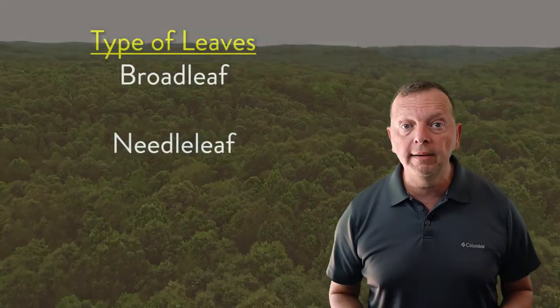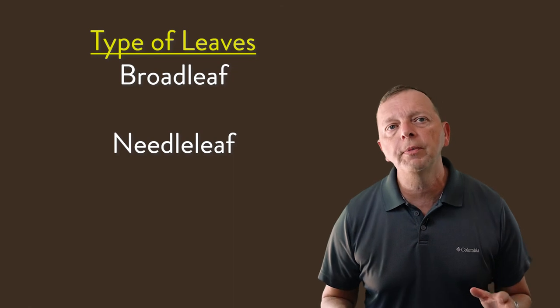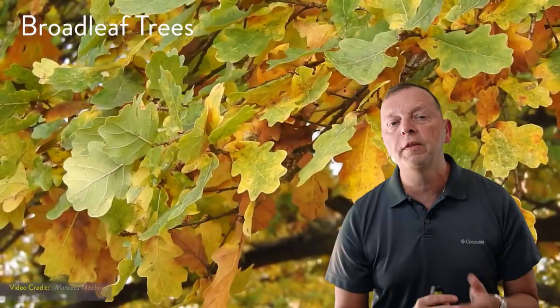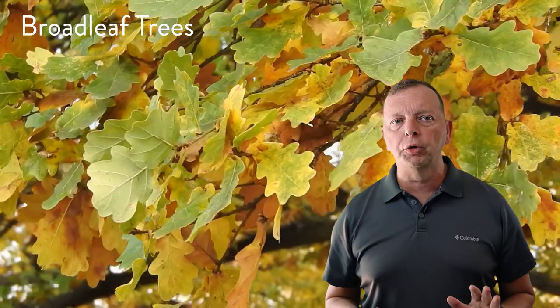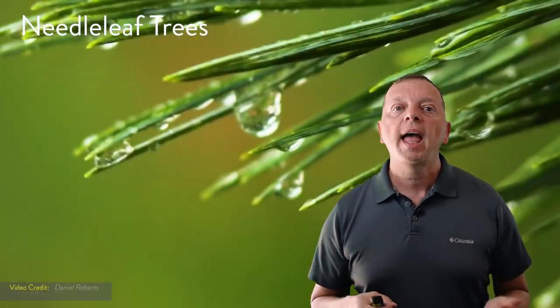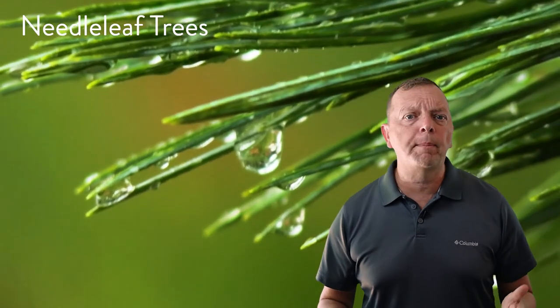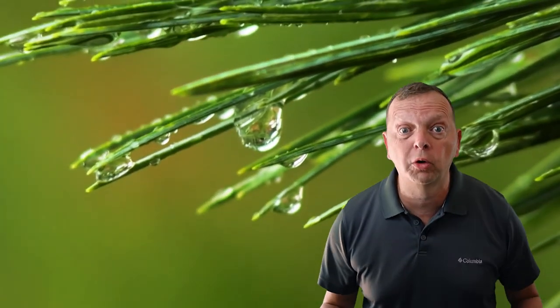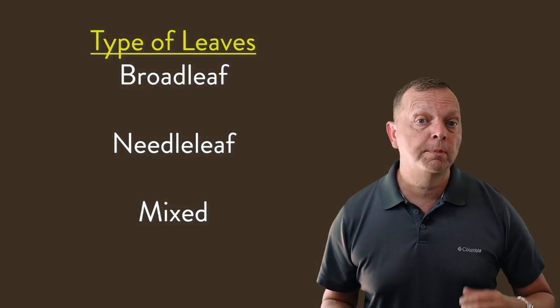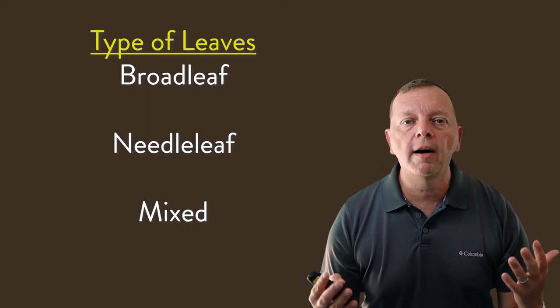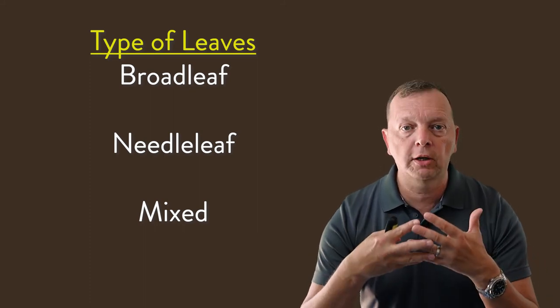First, we can divide forests by the type of leaves that the trees have. There are broadleaf trees — trees with flat leaves like an oak or maple tree. Needleleaf trees, also known as conifers, have needle-type leaves much like what you find on a pine tree or a Christmas tree. If a forest has both broadleaf trees and needleleaf trees, they are often called mixed forests.